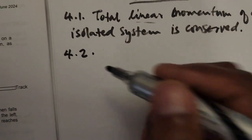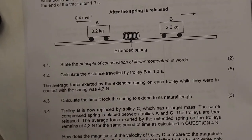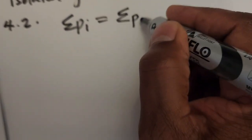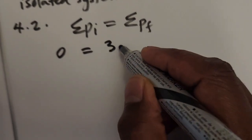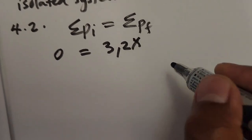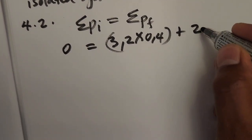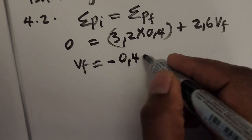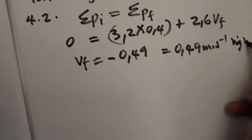The next question asks us to calculate the distance traveled by trolley B in 1.3 seconds. We must first find the velocity of B using the momentum approach. Before the spring releases, they were stationary, so total momentum is zero. After release, A moves at 0.4 m/s — take that as positive. So: 0 = (3.2 × 0.4) + (2.6 × vf). Solving gives vf = −0.49 m/s, which means 0.49 m/s to the right.